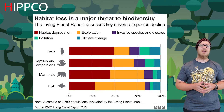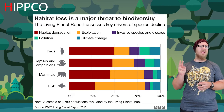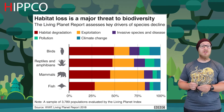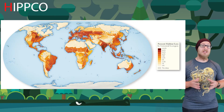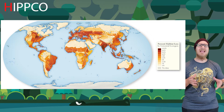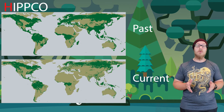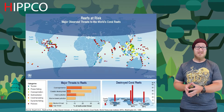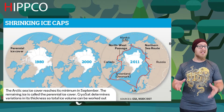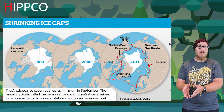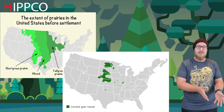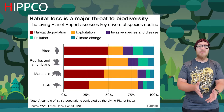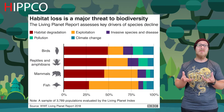Habitat loss is the leading reason behind declining biodiversity, and it splits into three ways habitats can be disturbed: destruction, fragmentation, and degradation. The leading cause is habitat destruction. Since humans began doing human stuff, an estimated 80% of our forests have been removed or heavily degraded. We've lost 30% of all coral reefs since just the 1980s, permanent ice coverage is declining at 11.5% per decade, only half of American wetlands remain, and half of all temperate grasslands have been converted to farmland.